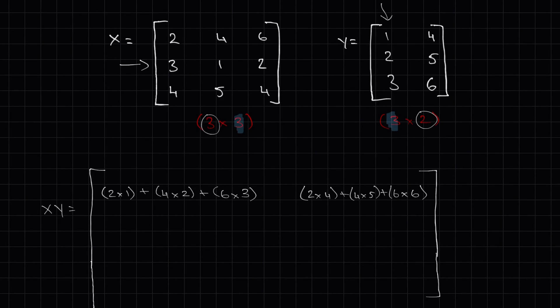Then we continue like we have in the past, taking each row from matrix X and multiplying it by each column in matrix Y. As we reach the end, we can check that we have three rows and two columns like we predicted.